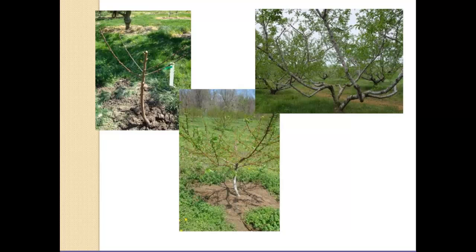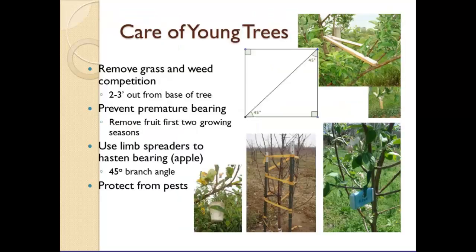More pictures show peach trees with the heading cut visible and four branches that broke and resulted. The tree a few years later, and then the tree yet again when fully mature — nothing maintained in the center, all branches pruned so they're always going upward and outward.